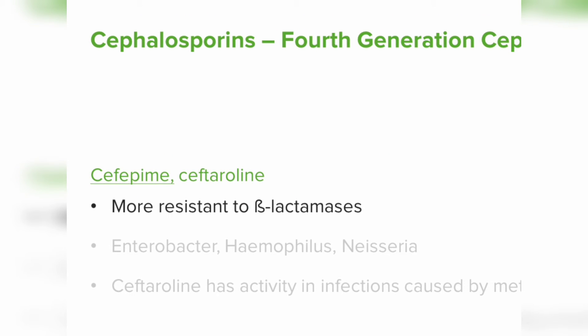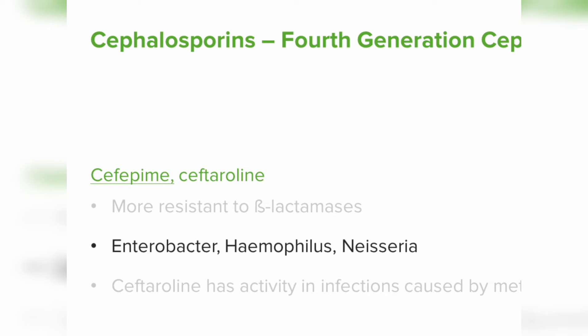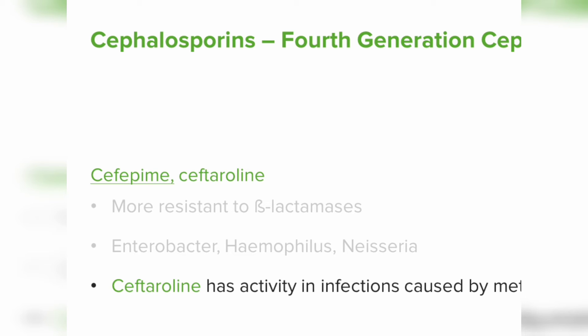Cefepime is the prototypical fourth-generation cephalosporin, an important drug to know. These are more resistant to beta-lactamases and also active against Enterobacter, Haemophilus, and Neisseria. Ceftaroline has activity against infections caused by methicillin-resistant staphylococci. Remember that cephalosporins are less likely to cause rashes and allergic reactions compared to penicillins.